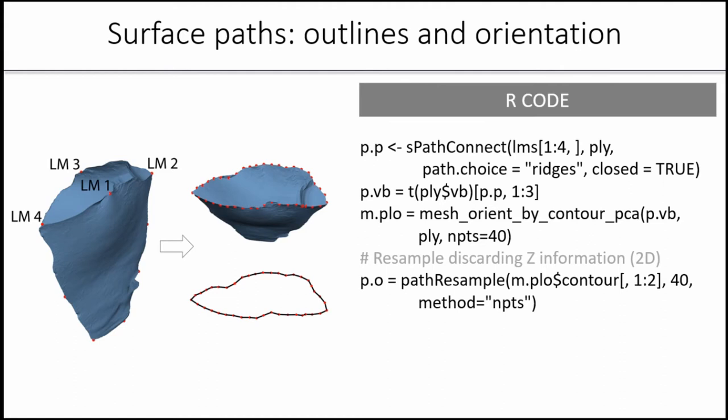Then I can use this function to perform a PCA alignment of this contour and apply the same transform to the actual mesh object with which it is associated. After that, because these points will be in 3D, I can use this path resample function using only the coordinates to obtain equidistant points in a closed contour with a known starting point, which in this case would be the point of percussion. This can be used right away in elliptical Fourier analysis.